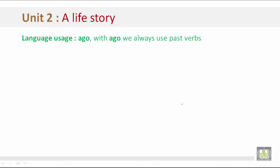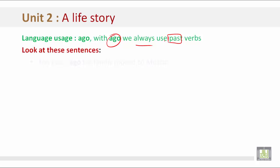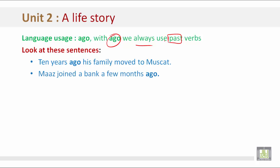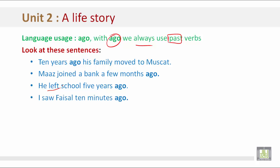Language Usage: Ago. With 'ago', we always use past verbs. Look at these sentences: 'Ten years ago, his family moved to Muscat.' 'Maz joined a bank a few months ago.' 'He left school five years ago.' Remember, with 'ago' we always use past verbs — 'he left' is a past verb. 'I saw Faisal ten minutes ago.'